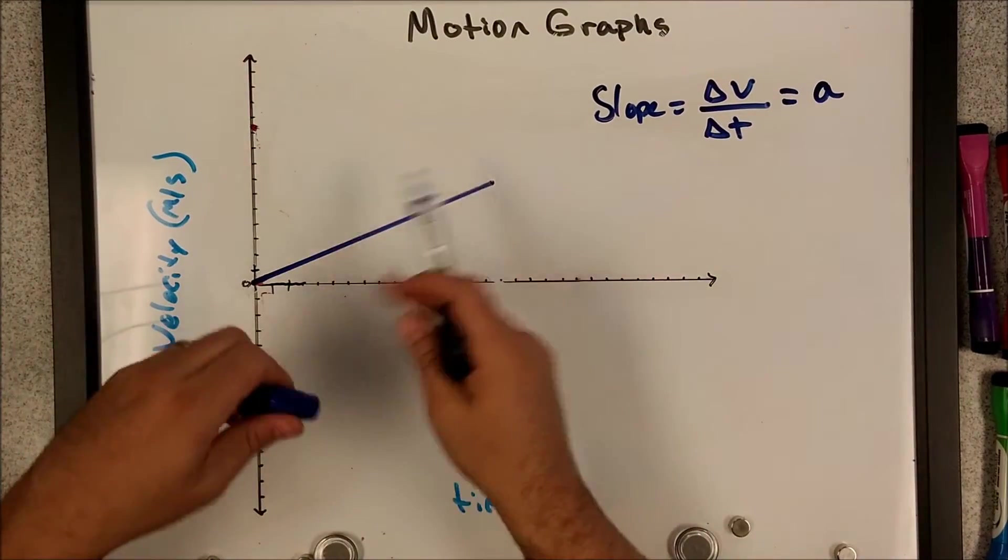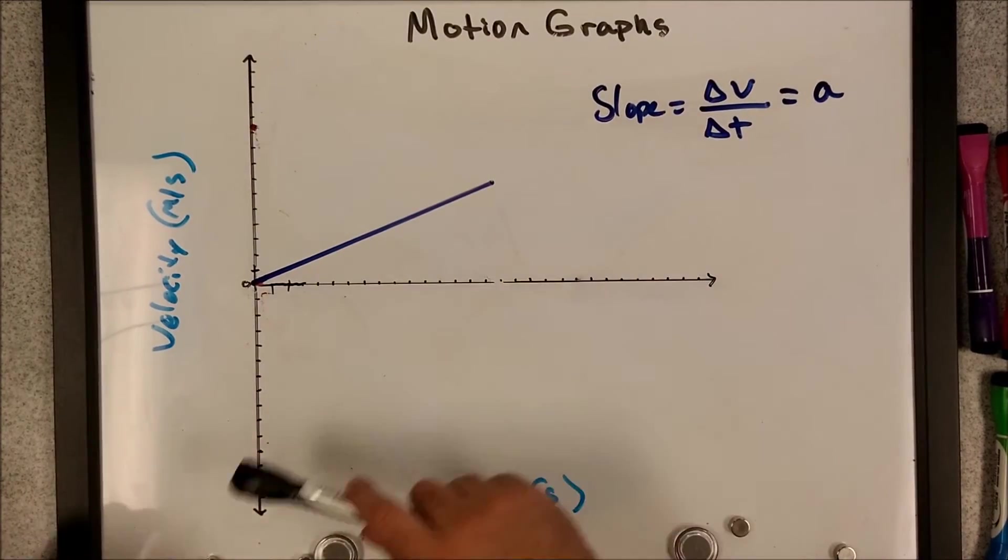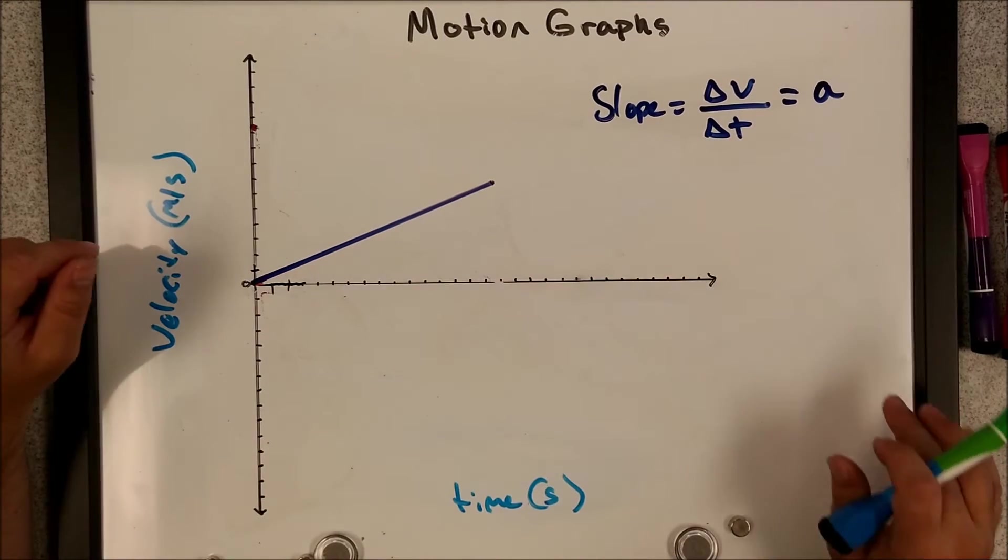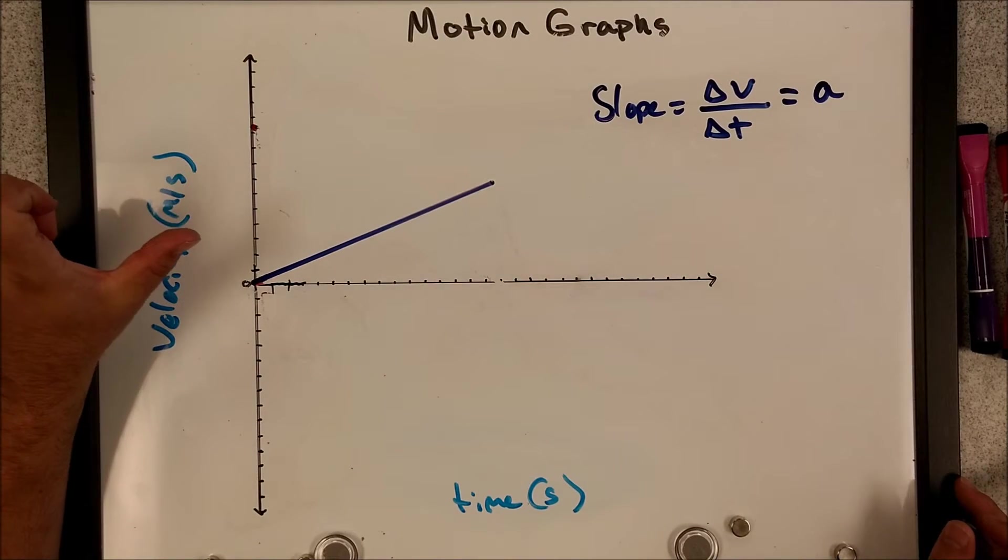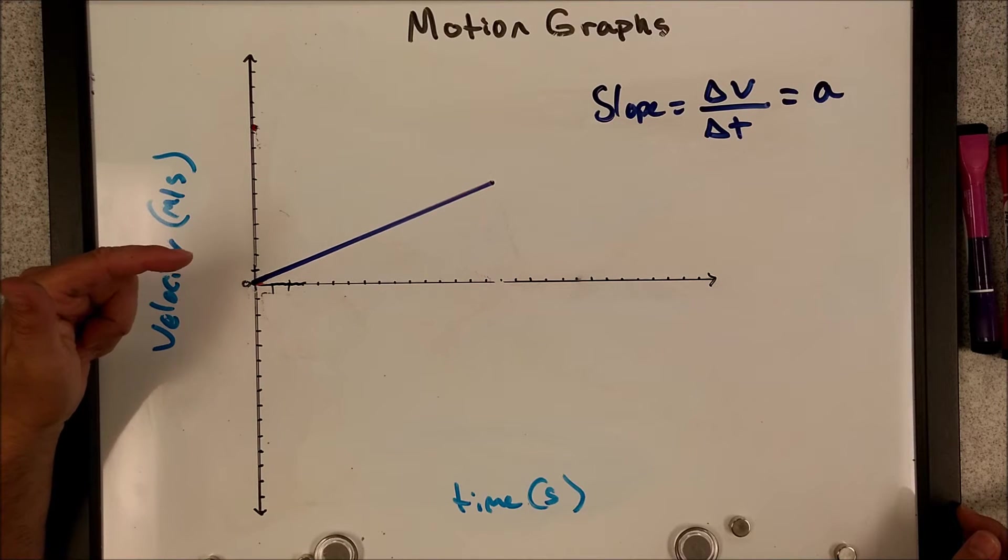What is change in velocity over change in time going to equal? I think I remember that one. Yep, acceleration. A velocity time graph, the slope is indeed representing acceleration. Cool. But before I even start talking about what is the slope of this graph, there's another thing that we need to look at for velocity time graphs. And this is the case for a lot of graphs. So it's always slope. And in the last video, I told you the other one you want to look at is area.